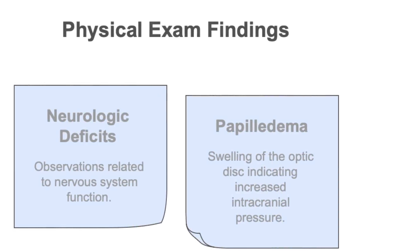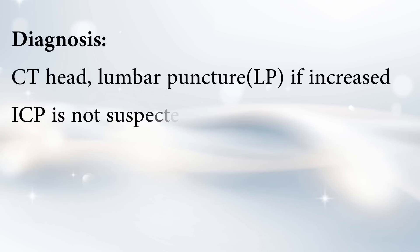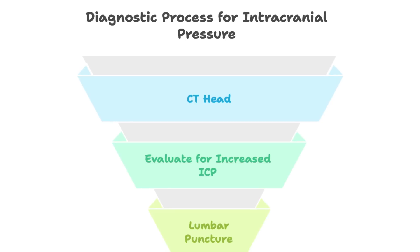Physical signs of increased ICP include neurological deficits like weakness or numbness, and papilledema — swelling in the back of your eye visible during an eye exam — which happens when the pressure in your head goes up. A CT scan of the head is usually the first step for diagnosis. A lumbar puncture can be helpful too, but there's a big warning: don't do it if you think the pressure in the skull is already high, because that can be dangerous. If they suspect idiopathic intracranial hypertension — high skull pressure for no clear reason — they might consider an LP. Treatment again requires a neurosurgery consult.